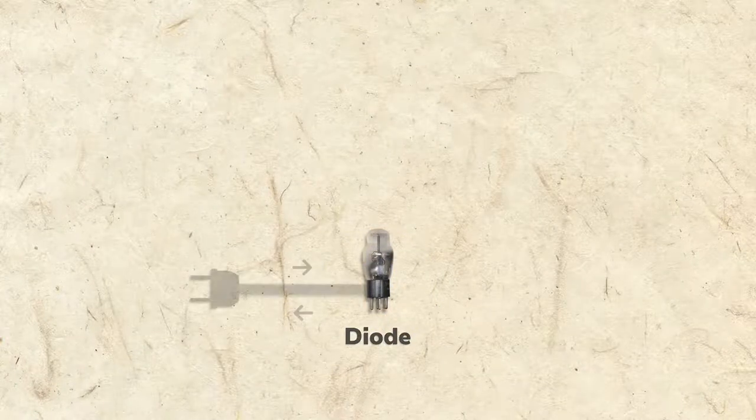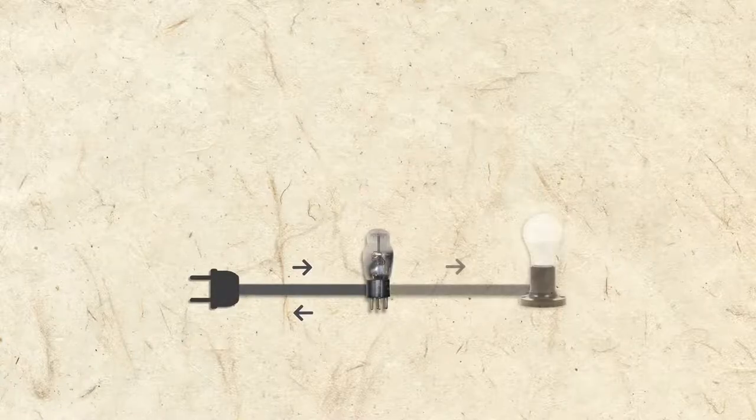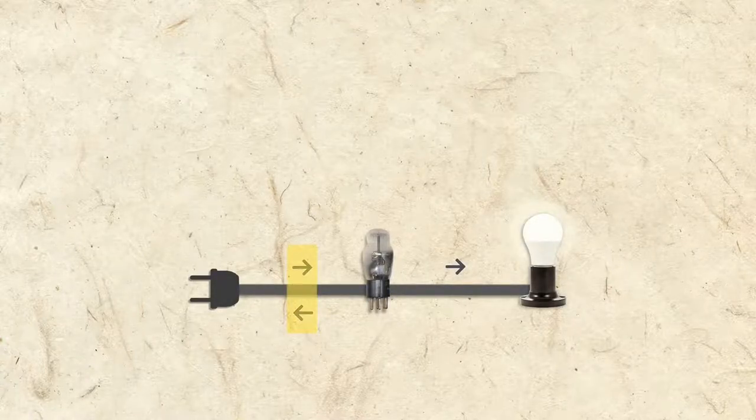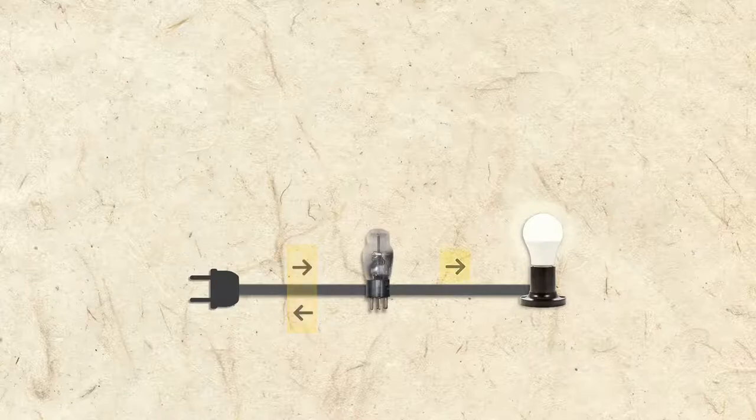Diodes have a useful property. They only allow power to flow through them in one direction. So when alternating current enters a diode, only the forward direction is allowed to pass, converting AC to DC.